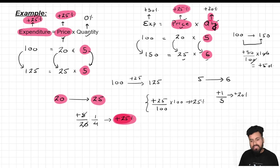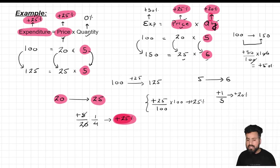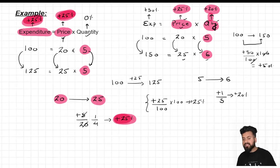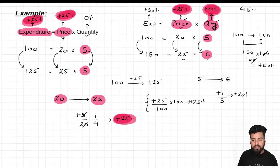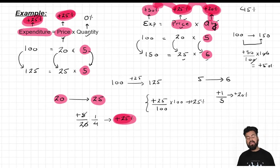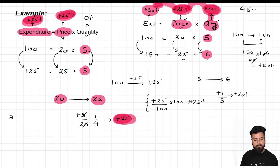Now please focus on these values. Price was changed by 25% and quantity was increased by 20%. Some of you must have anticipated: when we increased price by 25% alone, expenditure increased by 25%. In the second scenario, I increased price by 25% and quantity by 20%, so you might say the answer should be 25 plus 20 = 45%. But the actual answer is 50%. The reason is that this is the successive effect of both changes — 25 and 20 — and to confirm this, let me apply the formula of Successive Percentage Change: A + B + (A × B)/100 = C.